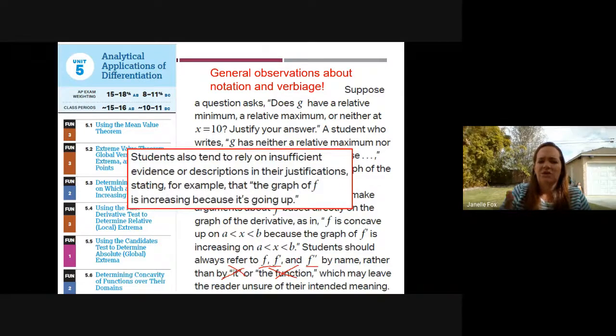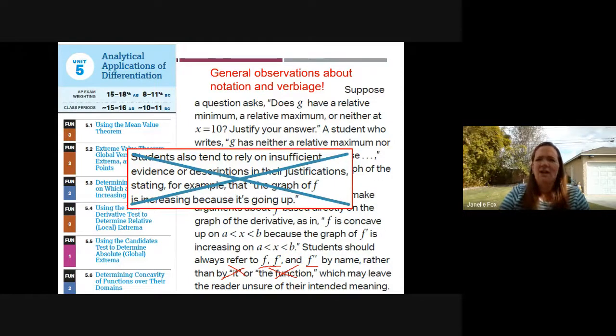You should always refer to the things by name, like by F or F prime or F double prime. Don't ever use the word it. So it is going to not be in our vocabulary or the function, because there could be several functions that we're talking about. So make sure you're using precise language. That's really, really, really important. And so this would be like a really bad answer.